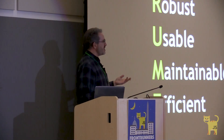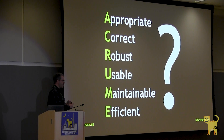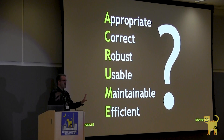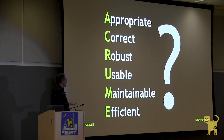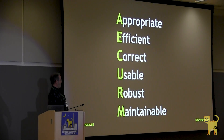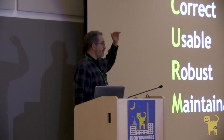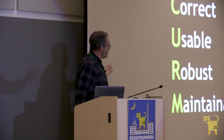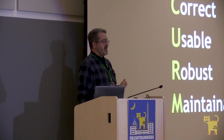Consider something like a company-internal command-line physics simulation tool using a standard formula that's never going to change. Its list may look more like CRUMEN rather than ACRUMEN. The only constant is that appropriateness will always be at the top. And we'll soon see why, because now I'm going to delve more closely into each aspect. And up first is, of course, appropriateness.